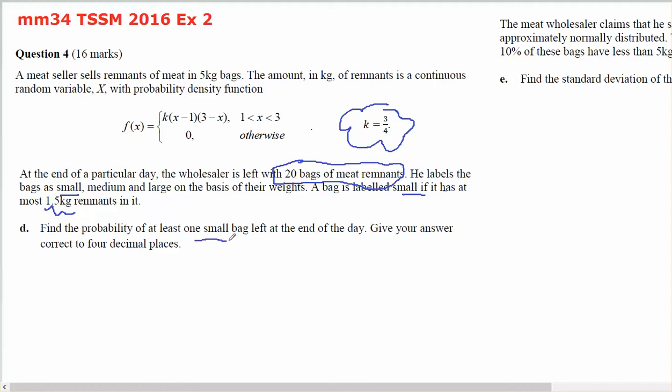What's the probability that at least one small bag is left at the end of the day? So it's a probability that small is at least 1, where small is a binomial because I have 20 bags and I need to work out the probability of it being small.